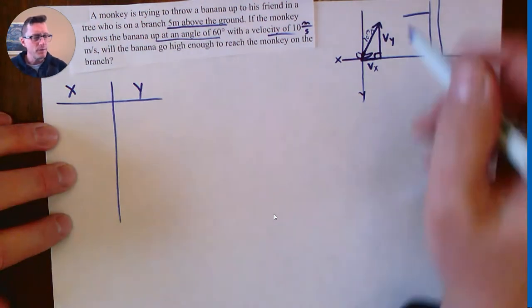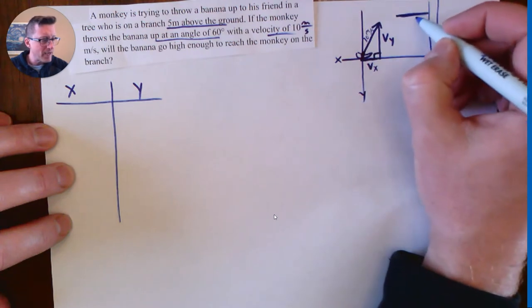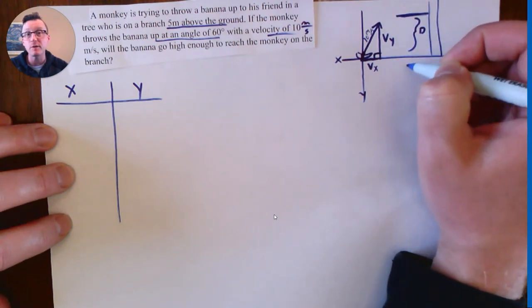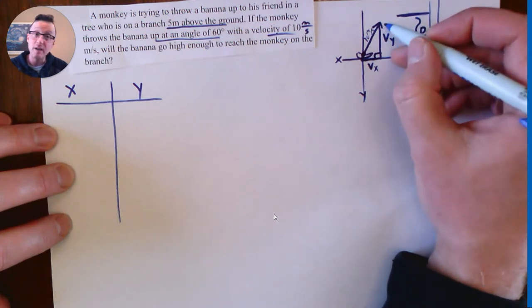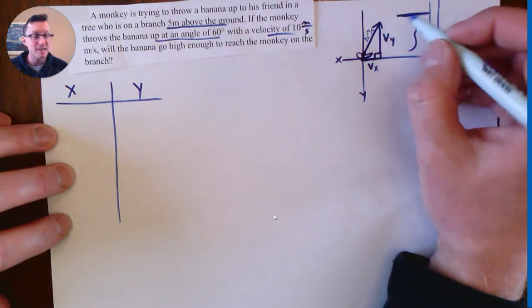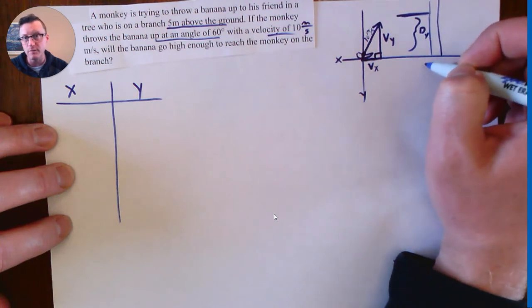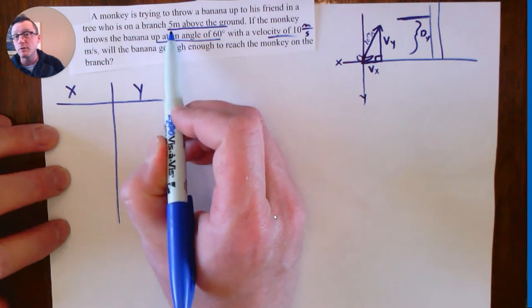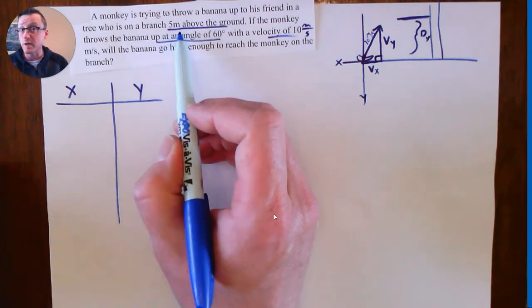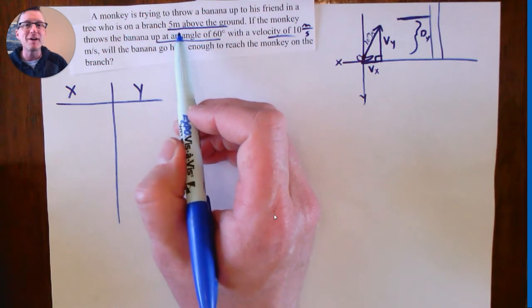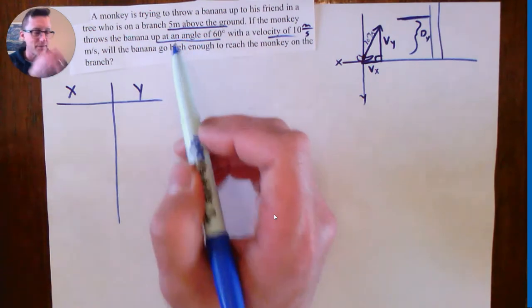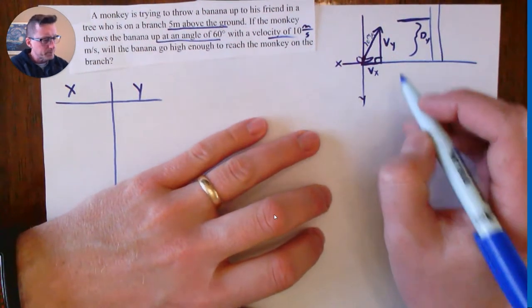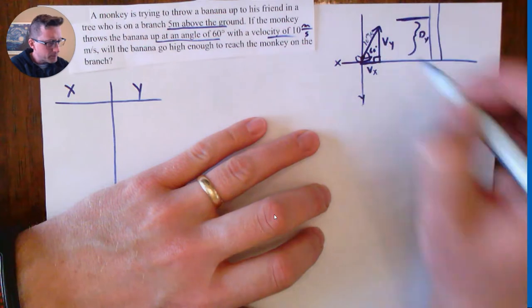So if you think about what this question is asking, this question is asking, does the distance from the ground to the branch or the ground of the highest part of the banana's throw, does that get high enough? So this is a d_y that we're looking for. And we're basically seeing if the d_y is bigger or smaller than five. If it's bigger than five, the monkey friend can catch it. If it's smaller than five, it doesn't quite make it high enough. So let's go about and do that. So we know v_y. Oh, I forgot. 60 degrees.